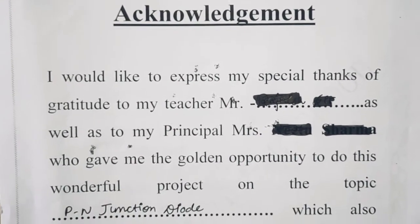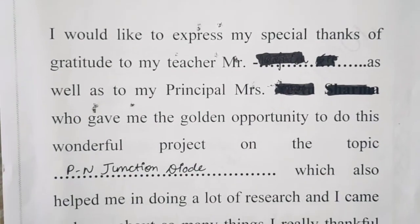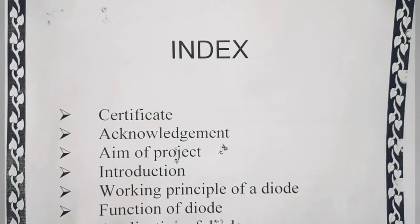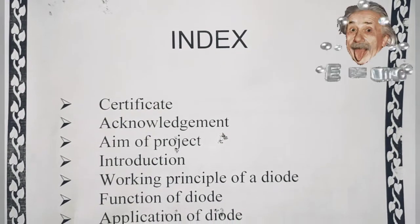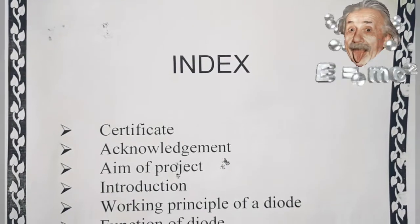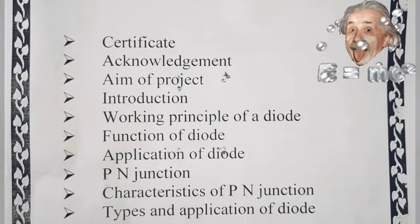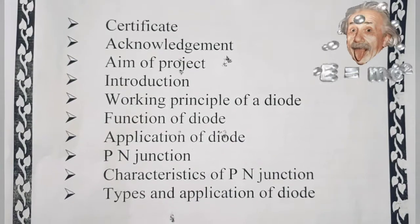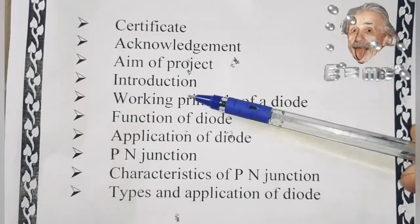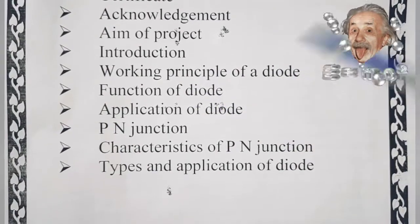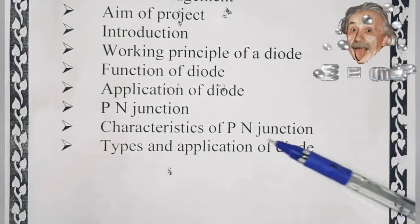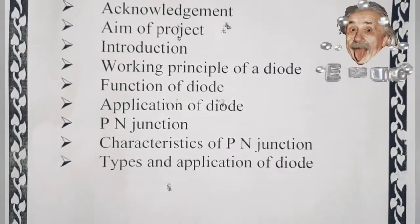The next page consists of the index. Under the heading of index, various sub-topics are mentioned — certificate, acknowledgement, aim of project, introduction, working principle, function of diode, application of diode, PN junction characteristics, types of PN junction, and application of diode.